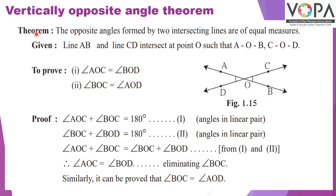Theorem: the opposite angles formed by two intersecting lines are of equal measure. Given: line AB and line CD intersect at point O, such that O is between A and B, and O is between C and D. We have to prove angle AOC equals angle DOB, and angle BOC equals angle AOD.